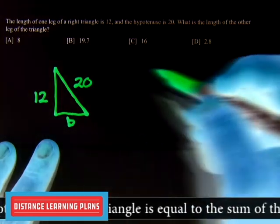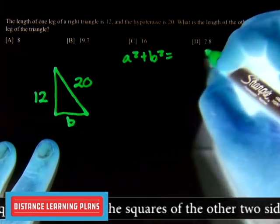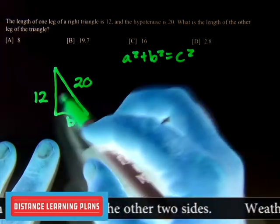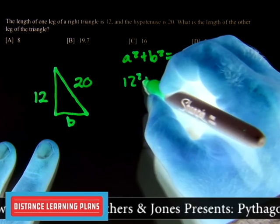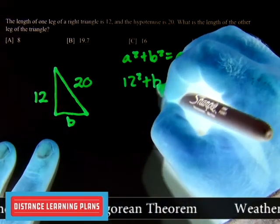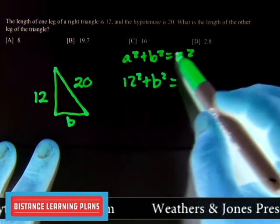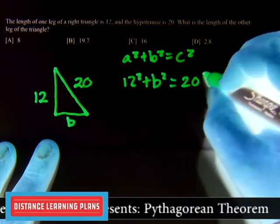So now we have our triangle, and now we can plug into our formula, A squared plus B squared equals C squared. So if A is 12, we'll plug in 12 for A, 12 squared, plus B squared, we don't know what B is, so we'll leave it alone. And then we'll plug in 20 for C, our hypotenuse, so we get 20 squared.